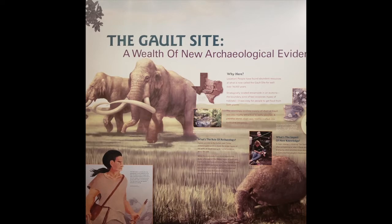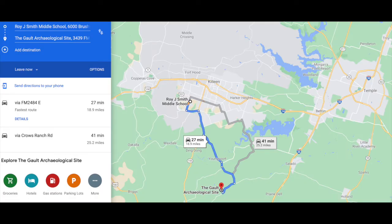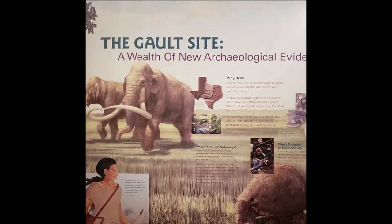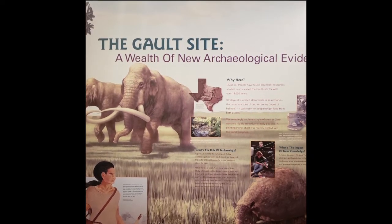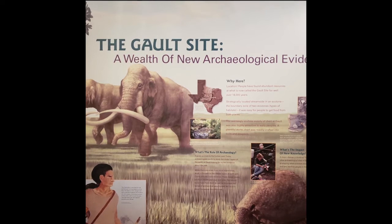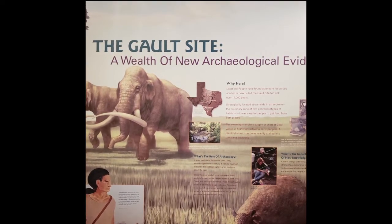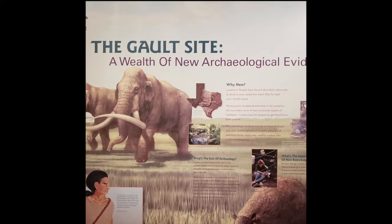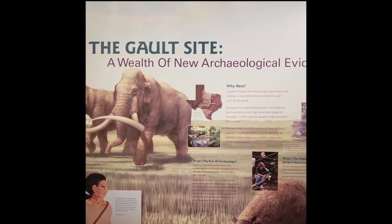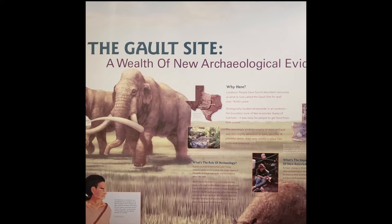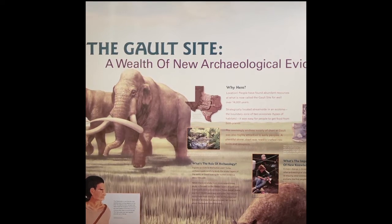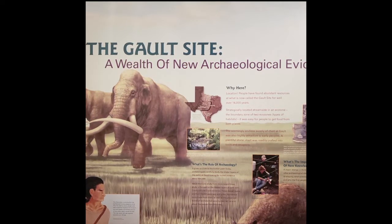The Galt site is located about 30 minutes southwest of Belton near Florence. It was discovered by archaeologists that the Galt site was very important to Paleo-Indians up to 20,000 years ago because it is part of two eco zones, which means that they have an abundance of all the different things they need to survive: water, shelter, and food that they can hunt and gather. Let's hear more from an archaeologist from the Galt School.